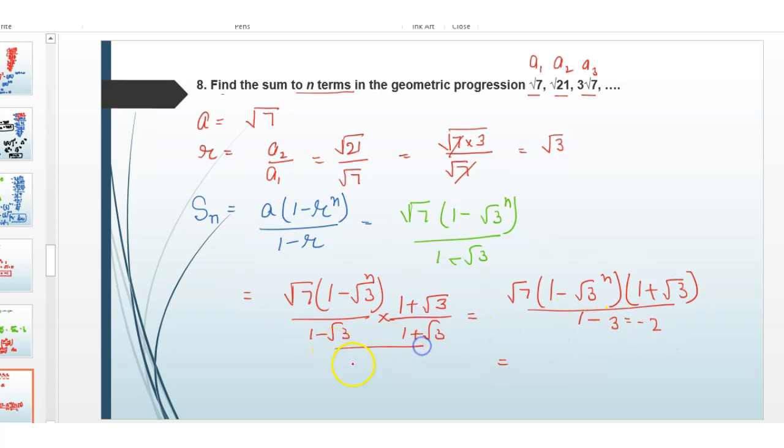So here we get minus root 7 upon 2 times 1 minus root 3 raised to power n into 1 plus root 3.